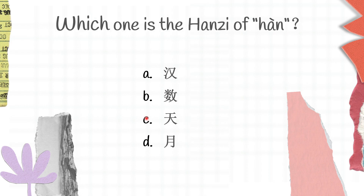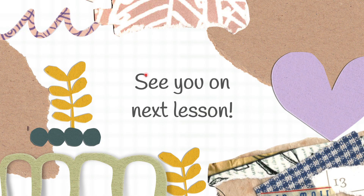Another question here: which one is the Hanzi of 'hún'? Do you guys remember? A is hún, B is shù, C is tàn, and D is yǔn. Hún here is A.